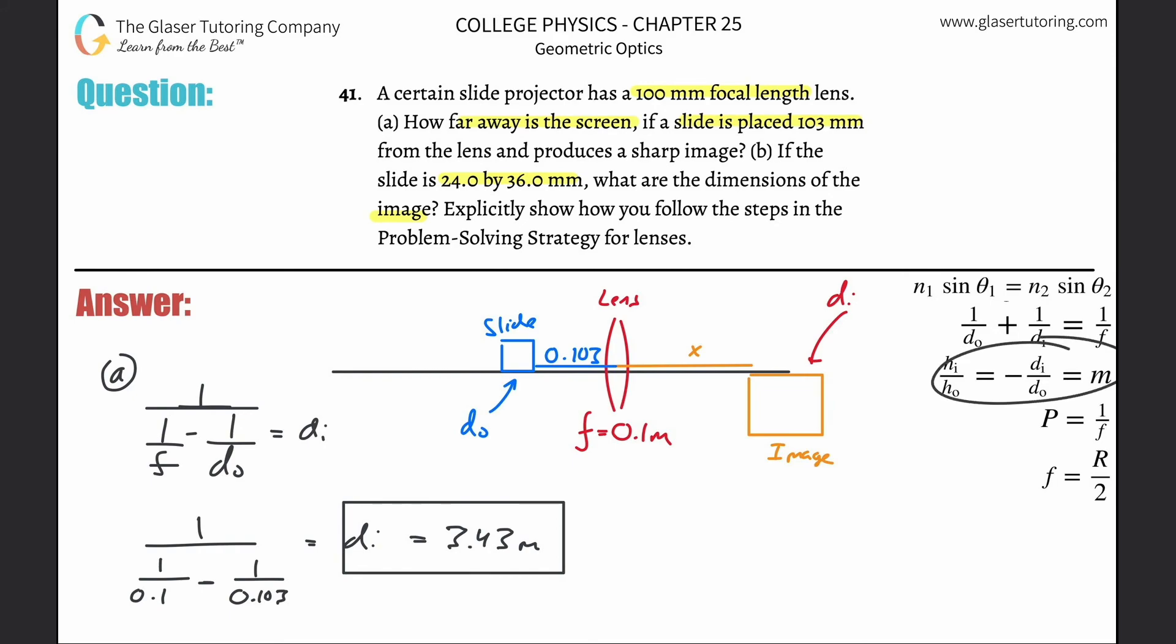For part b, magnification m = -di/do. We have these values: m = -3.43/0.103.